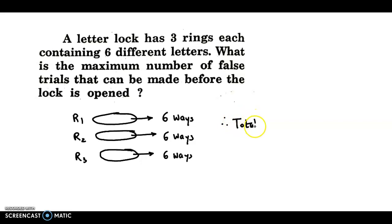So therefore, total codes we can make, or you can say the total ways of setting the three rings, or in other words, we could say the total trials could be six into six into six.